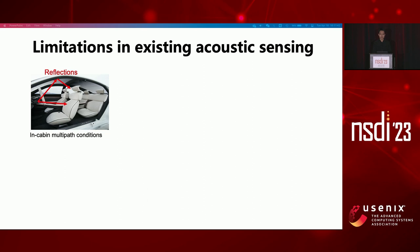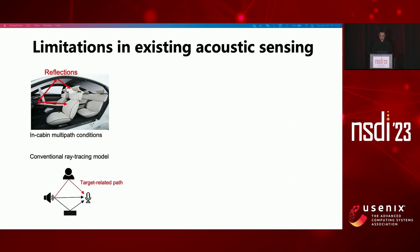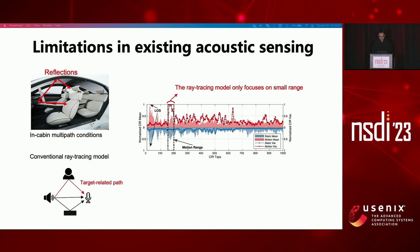However, performing in-car sensing with acoustic signals is not easy. As you can see from this figure, in-car environments are crowded with seats, making it hard for signal modeling. Traditional ray-tracing-based models try to separate individual signal paths and find the most relevant one related to the target. But for multipath-rich environments, when the person moves a little bit, most of the signal components will create variance, making it difficult to find the target.